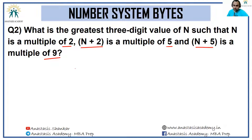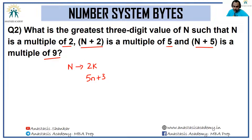About n: we know it is a multiple of 2, so it's a 2k kind of number. n + 2 is a multiple of 5 means n itself is a 5m + 3 kind of number — when you add 2 to it, it becomes a multiple of 5. Similarly, n + 5 is a multiple of 9 means n is a 9p + 4 kind of number, because if you add 5 to it, it becomes a multiple of 9.